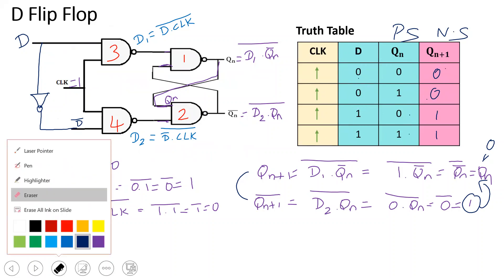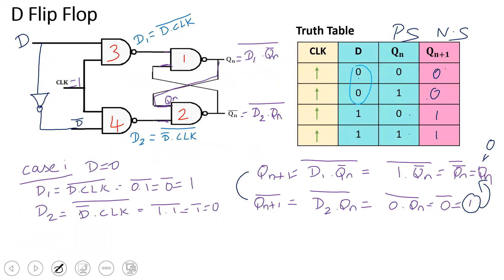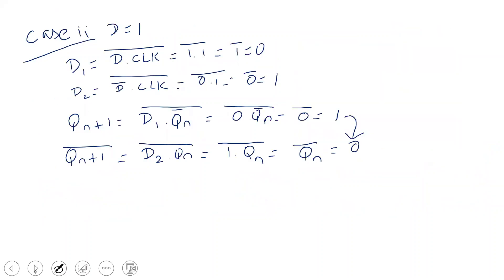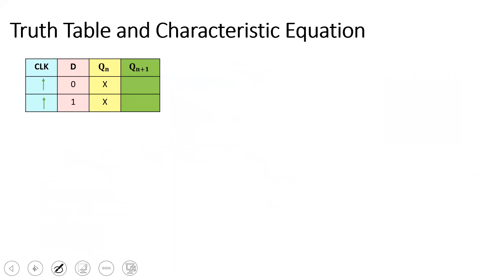So when D is equal to 0, the next state is 0; when D is equal to 1, the next state is 1 — that is why we call the D flip-flop a transparent flip-flop. When D=0, Qn is don't care (x), output is 0 — this is the reset condition. When D=1, output is 1 — this is the set condition.